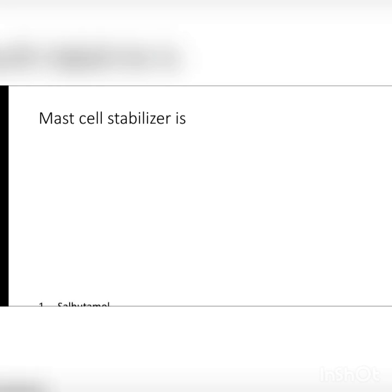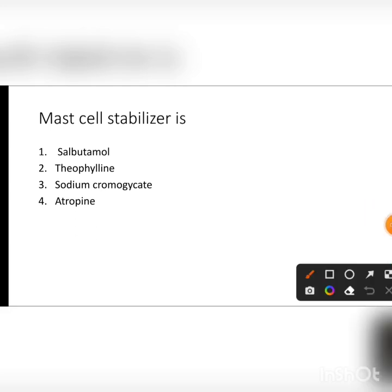Mast cell stabilizer question — options are salbutamol, theophylline, sodium cromoglycate, and atropine. Salbutamol is a drug of choice used as a beta-2 sympathomimetic and comes under bronchodilator classification. Theophylline also comes under bronchodilators in the methylxanthine category, along with aminophylline. Sodium cromoglycate and ketotifen are mast cell stabilizers.